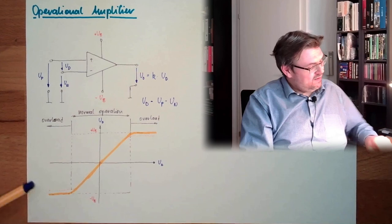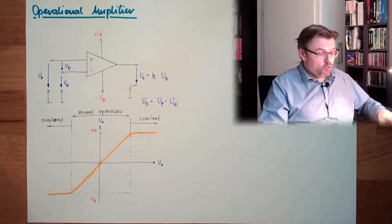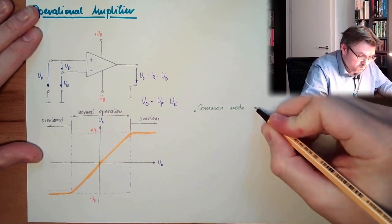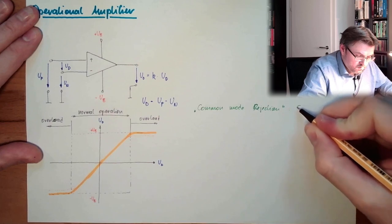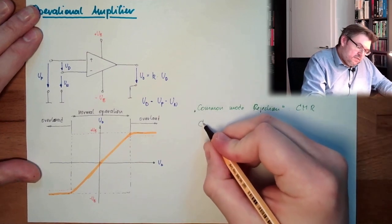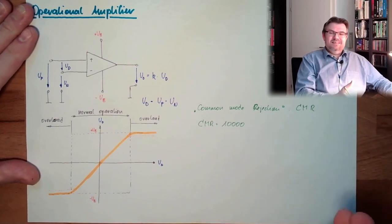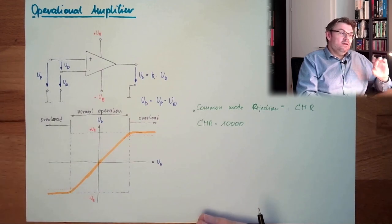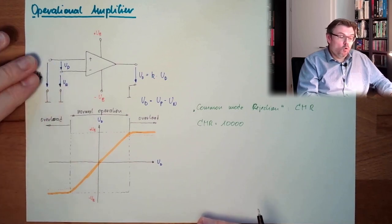Is this true? Well, would be true in an ideal world. We are not living in an ideal world, so there is something like a common mode rejection. CMR, common mode rejection, and usually, let's say, CMR equals 10,000. What does this mean, 10,000?